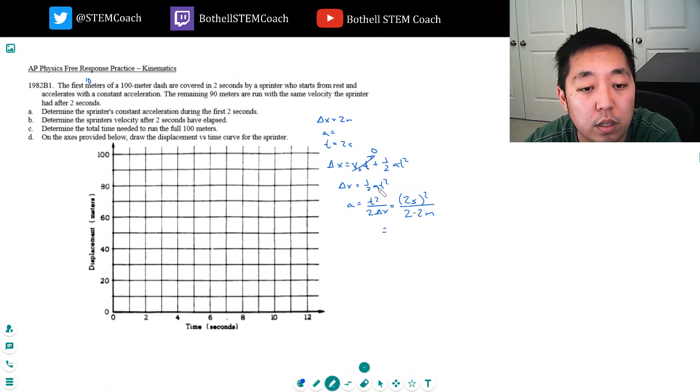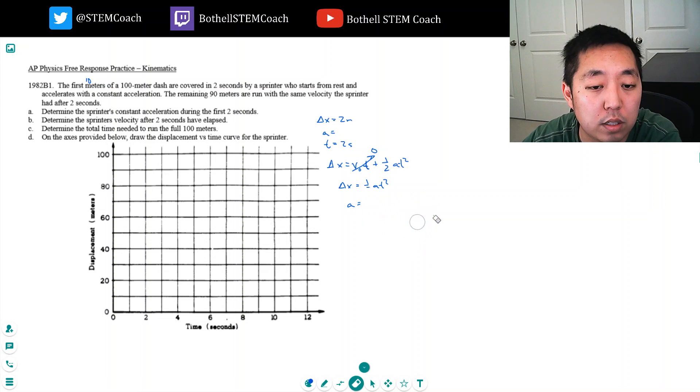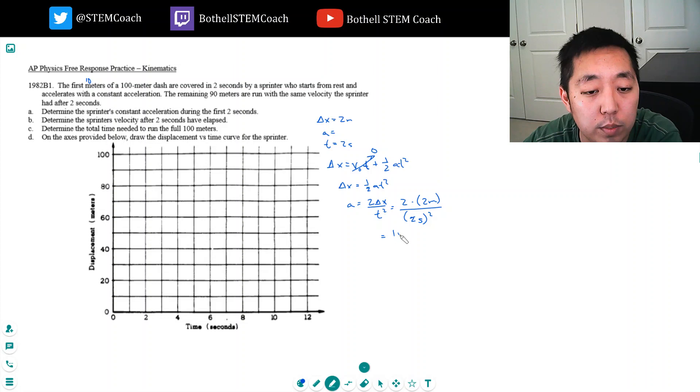Wait, no, I have this inverted. I was just checking the units. Let's redo this. a is two delta x over t squared. That's two times two meters over two seconds squared. That's four over four, that's equal to one meter per second squared. Okay, so that's part A.